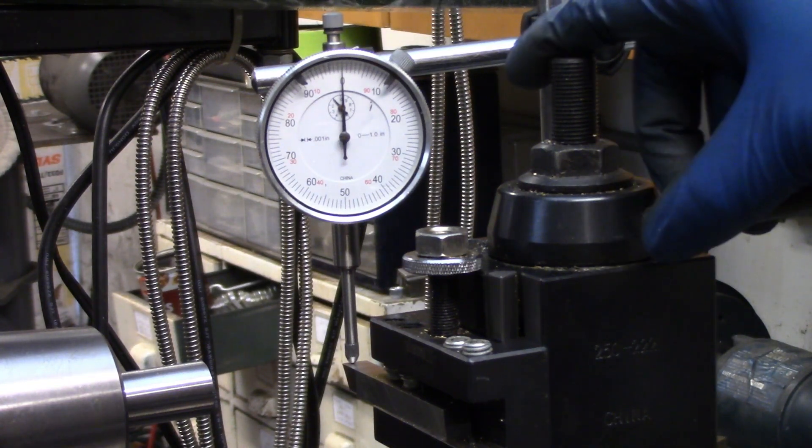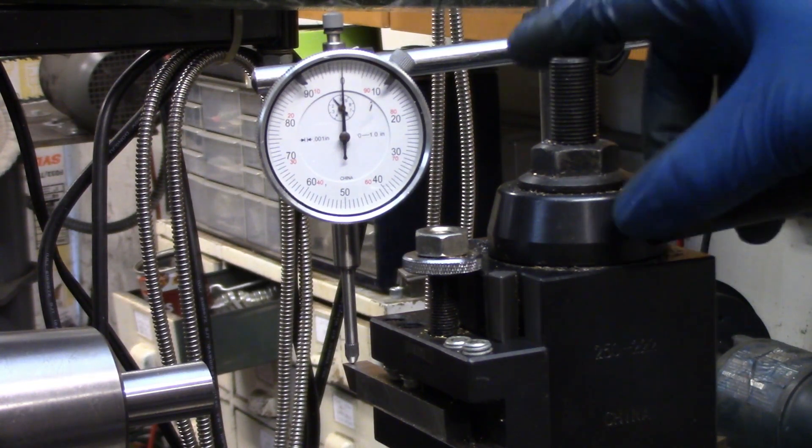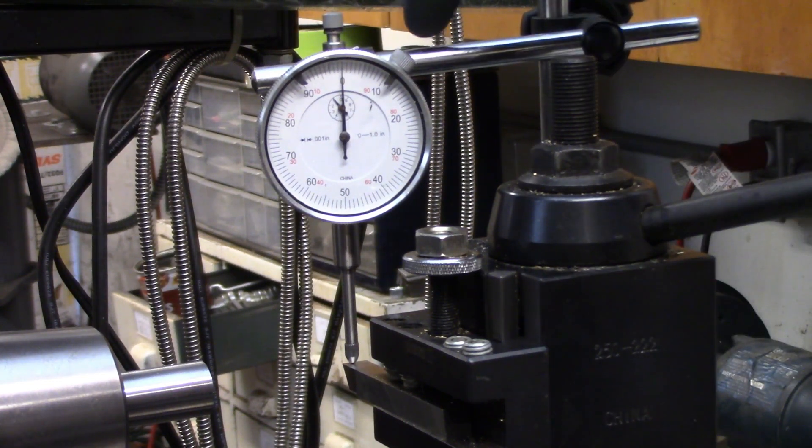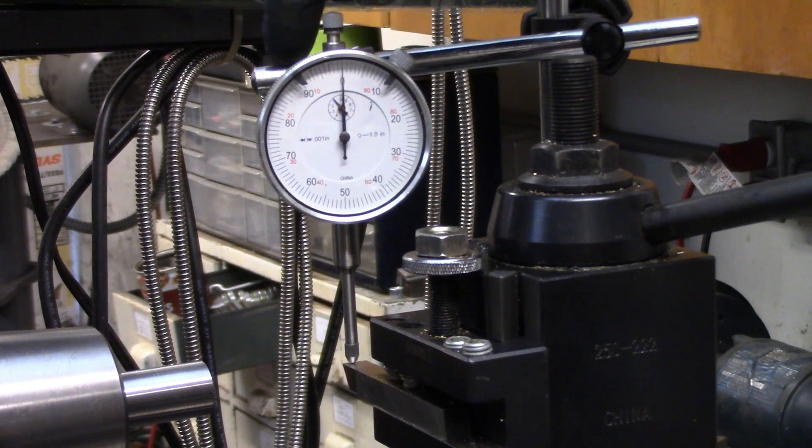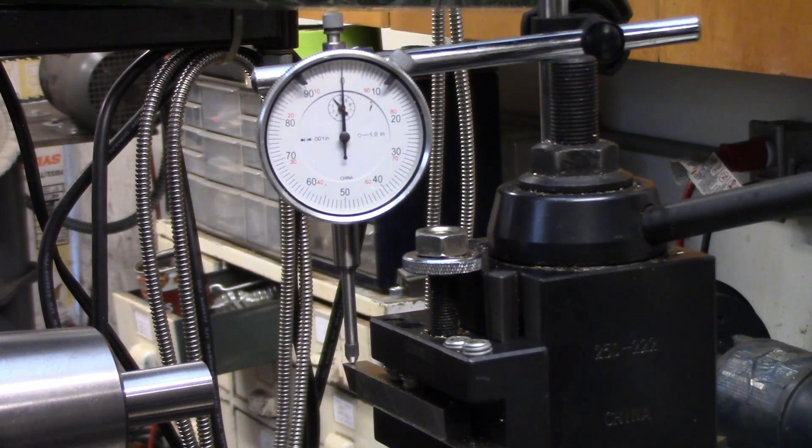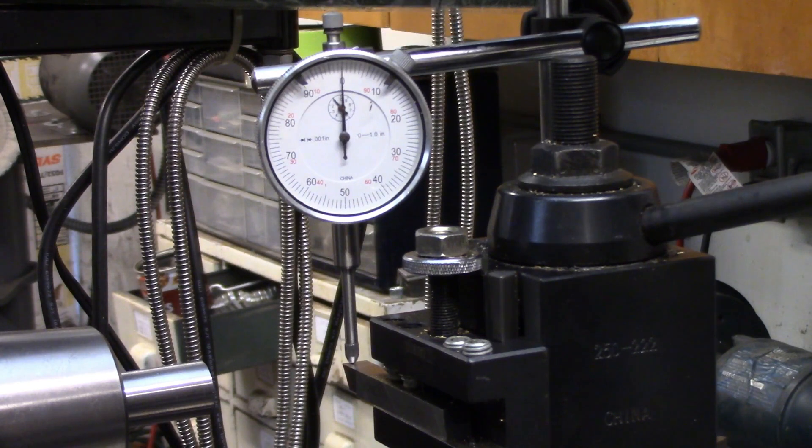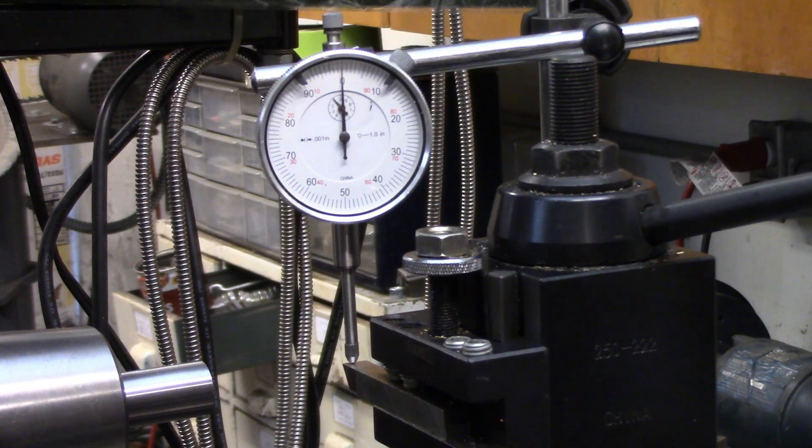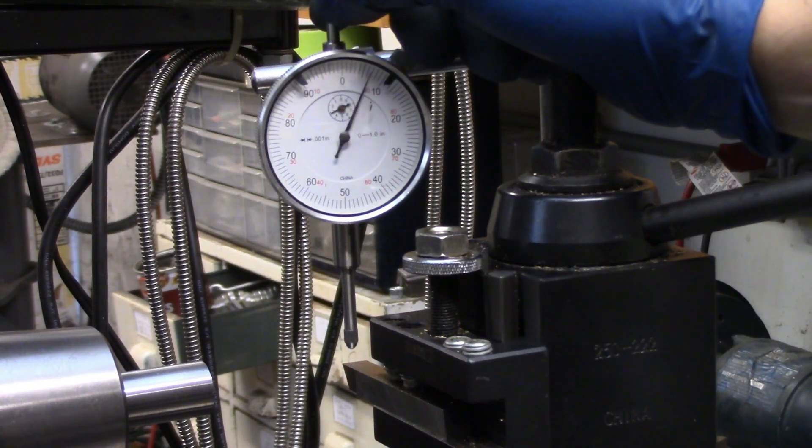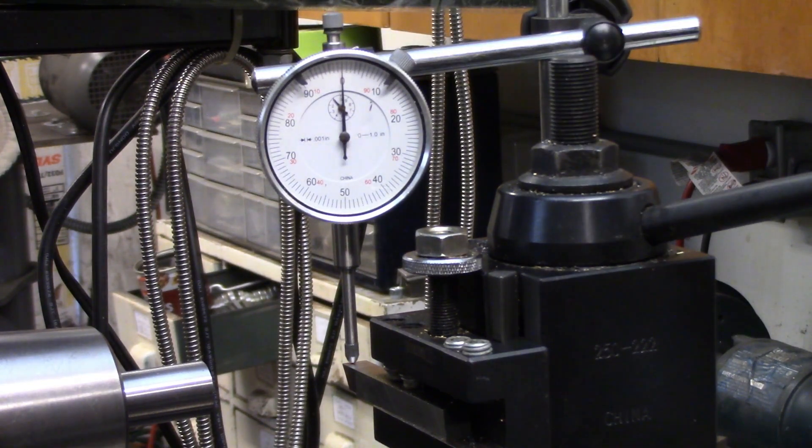I think the biggest source for deviation here in my test is actually this magnetic base indicator holder. You can see I can lightly push on this pretty much anywhere, including moving the indicator around, so it's very easy to bump this and get a different reading, and that could easily be happening while I'm pulling up on the plunger. I'm trying to do it as gently as I possibly can, but I'm human, and I like to think anyway that I'm stronger than I am.